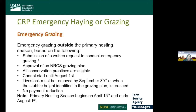Emergency grazing outside the primary nesting season (after August 1st) requires a written request and NRCS grazing plan approval. All conservation practices are eligible after August 1st, there is no 50% carrying capacity requirement, and livestock must be removed by September 30th or when the stubble height in the grazing plan is reached. There is no payment reduction for emergency grazing. The primary nesting season runs April 15th through August 1st.